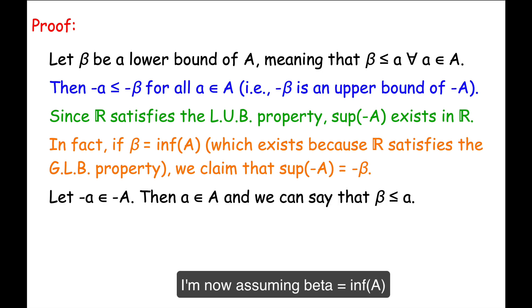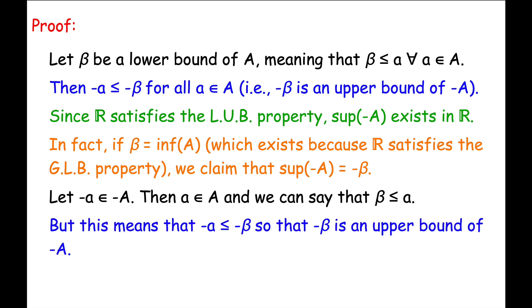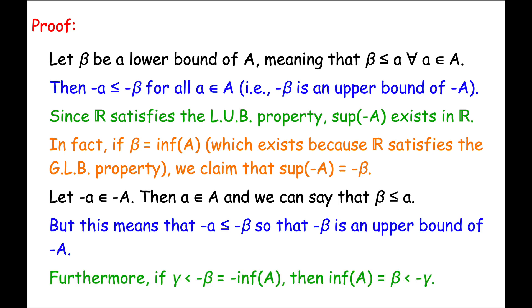Let negative little a be an arbitrary element of negative capital A. Then little a is an element of capital A. And since beta is the inf of capital A, we can say that beta is less than or equal to little a. Multiplying both sides of that inequality by negative 1 allows us to conclude that negative a is less than or equal to negative beta. In other words, negative beta is an upper bound of negative capital A because negative little a was an arbitrary element of negative capital A. Yes, it does kind of feel like you're running around in logical circles, but take the time to figure it out — it really is understandable when you take the time.